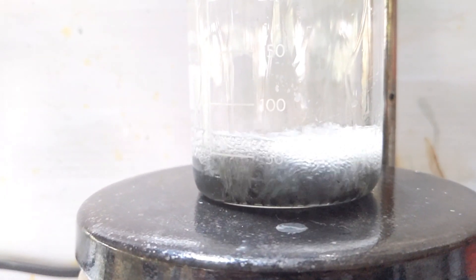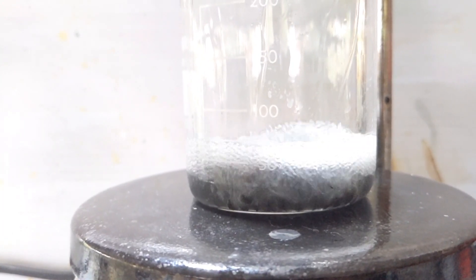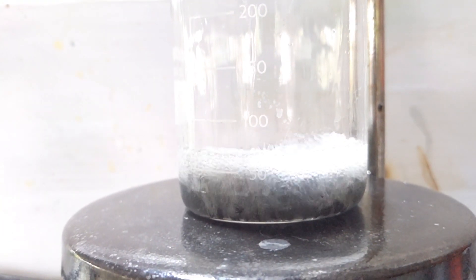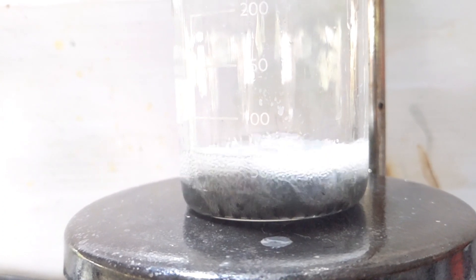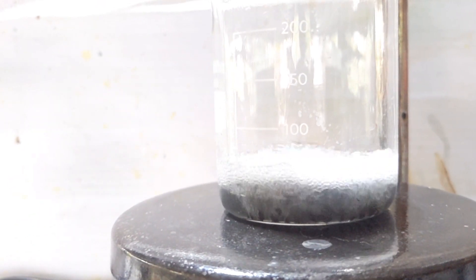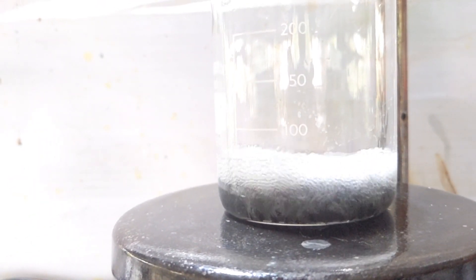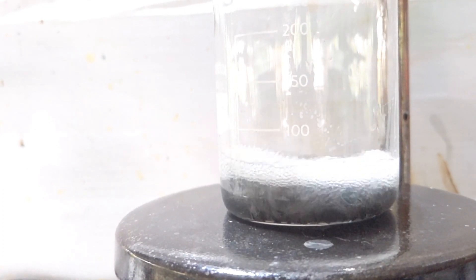Soon a vigorous reaction start to take place with the glacial acetic acid and a lot of bubbling occurs. This is why I used a relatively bigger reaction vessel for the small amount of reactants as there was a lot of splashing going on.